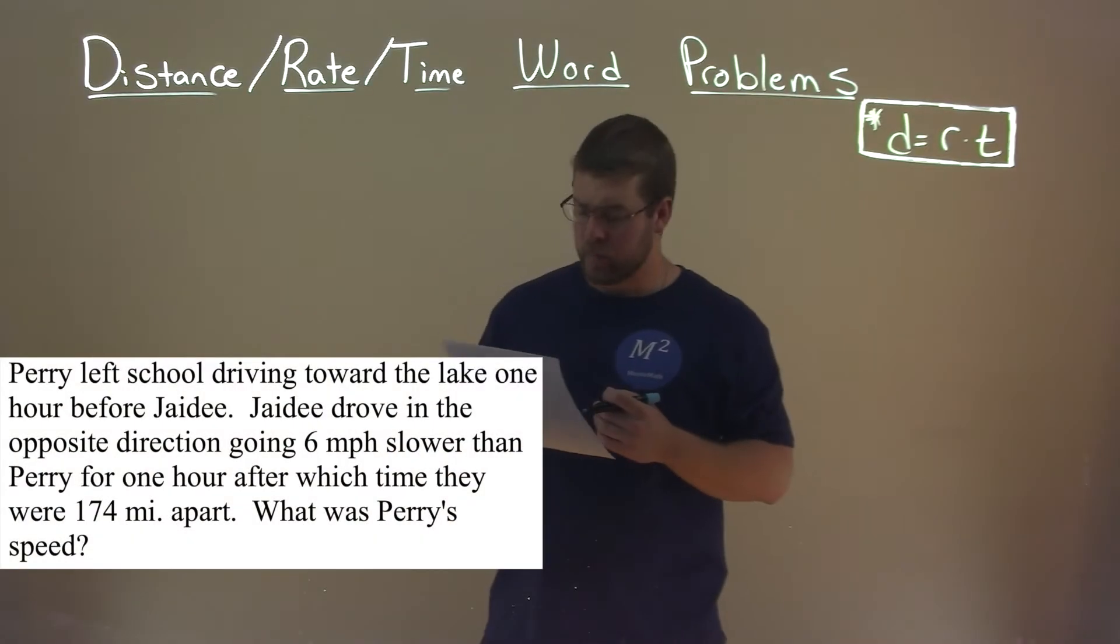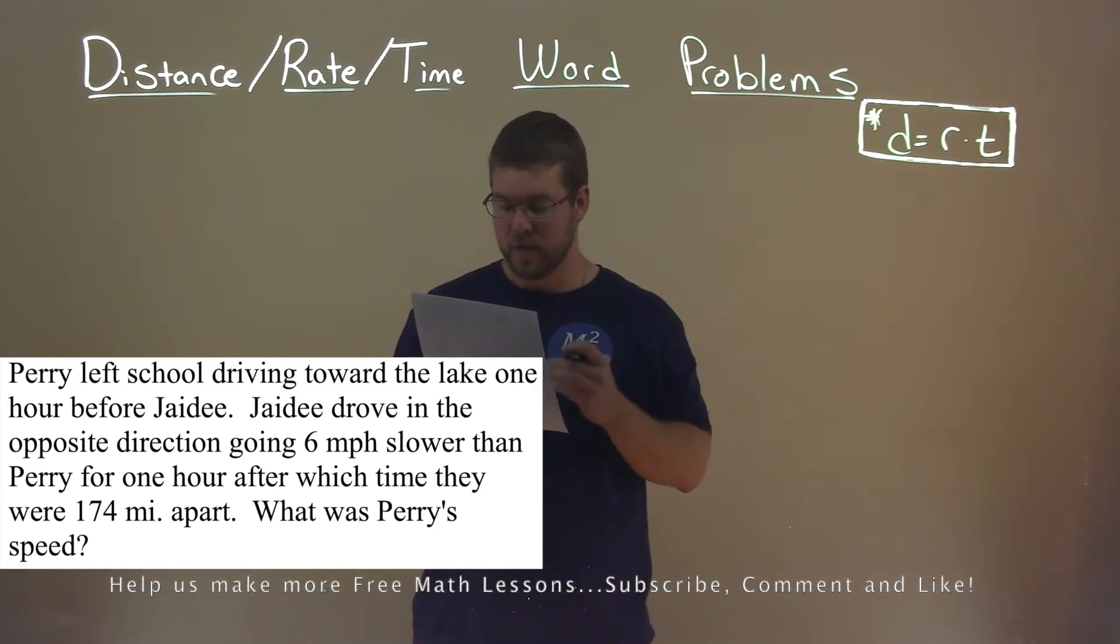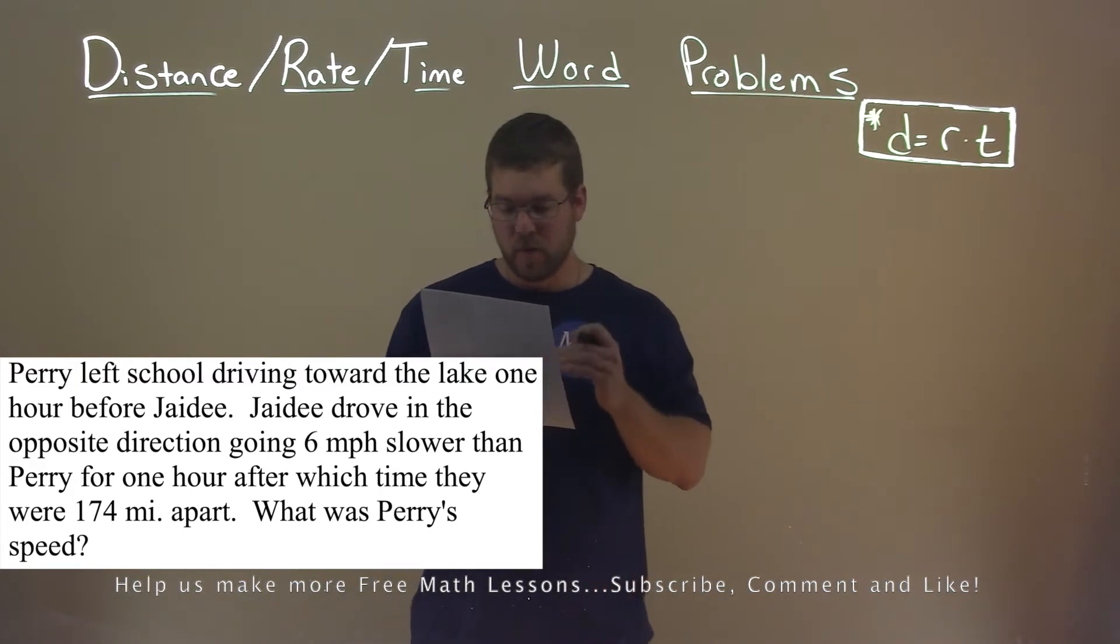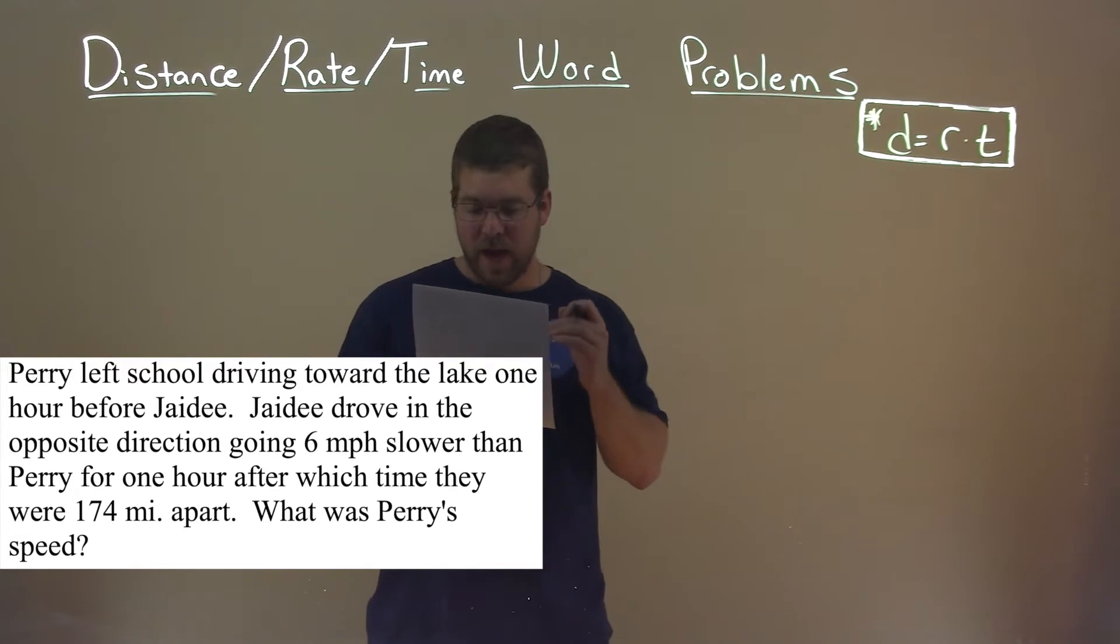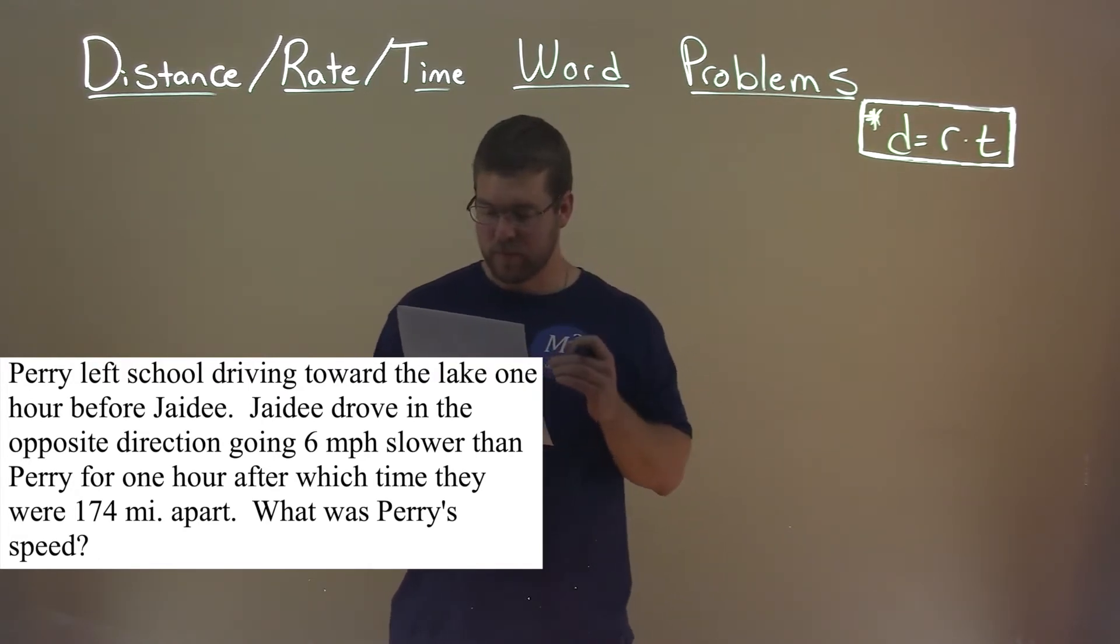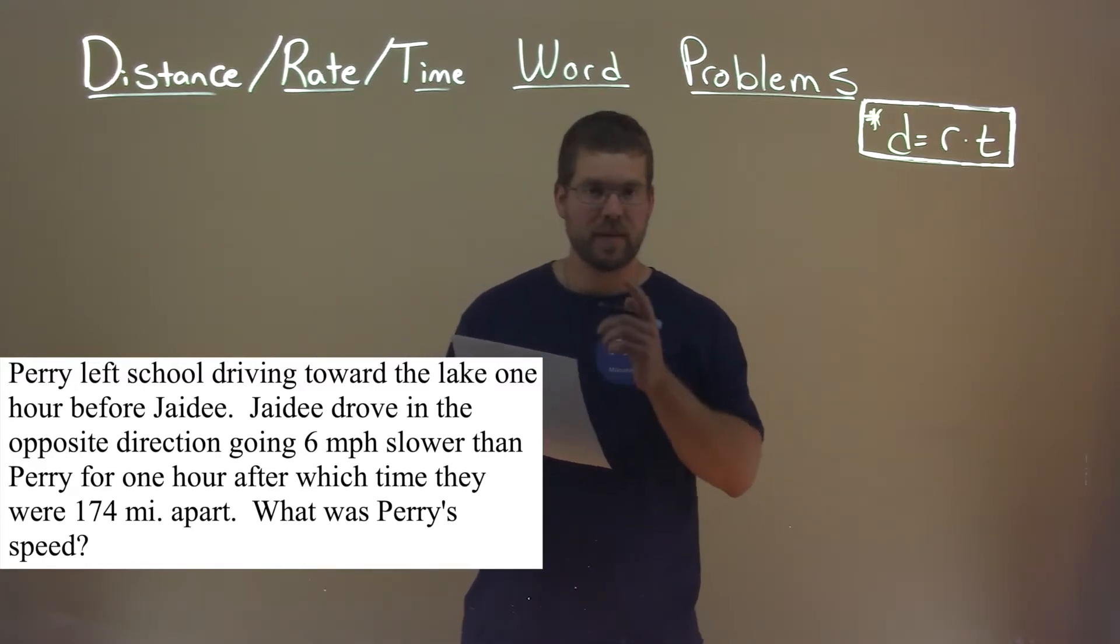We're given this problem right here. Perry left school driving toward the lake one hour before JD. JD drove in the opposite direction, going six miles per hour slower than Perry for one hour, after which time they were 174 miles apart. What was Perry's speed? This is a tricky one.